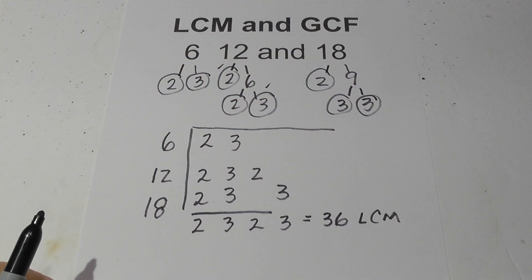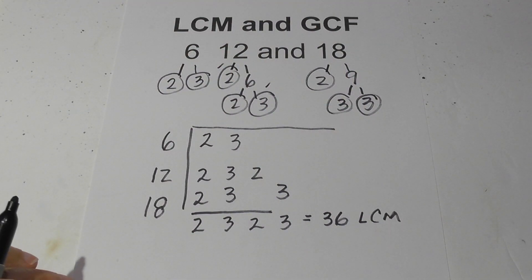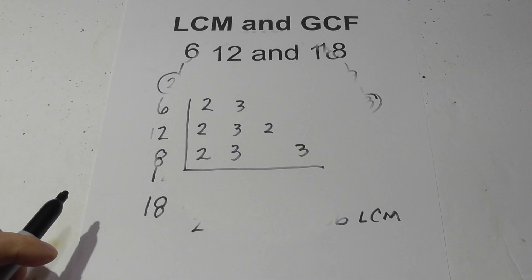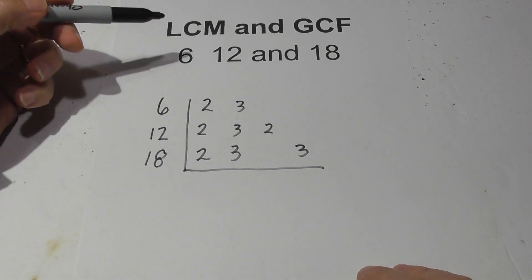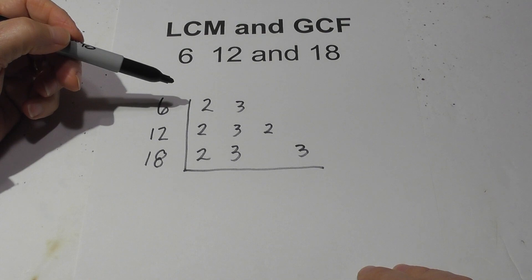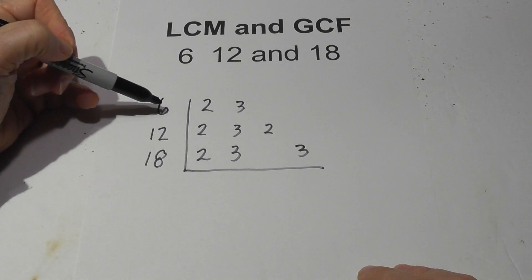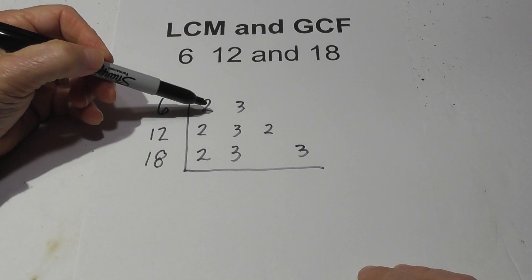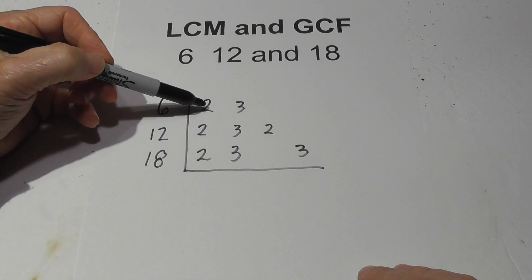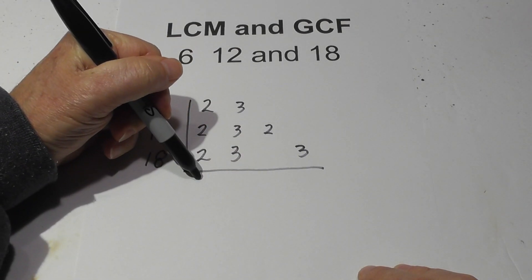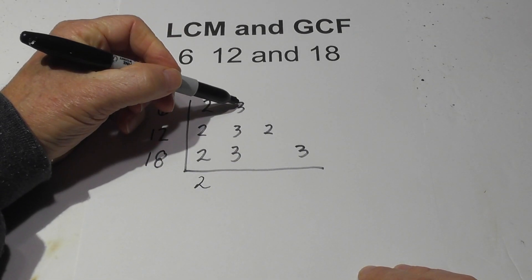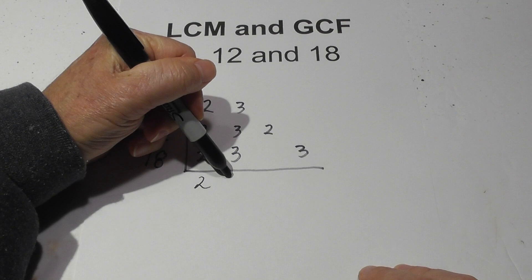Now for the GCF, I'm going to rewrite the chart. For the GCF, the rule is this: since you have three numbers, you're looking for triplets. So since I have three twos, I'm going to bring down a 2. I have three threes, so I'm going to bring down a 3.